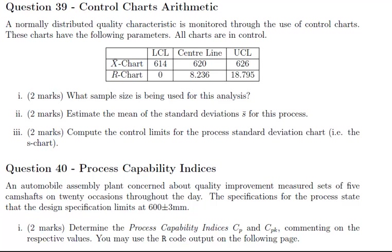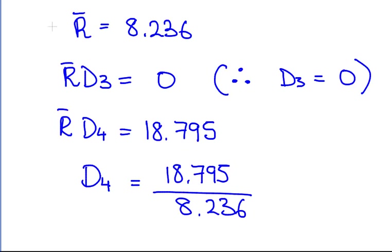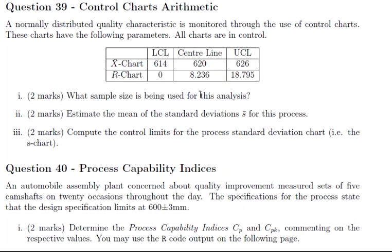So, how do we do this? Essentially what we are going to do is we are going to look at the R bar, R chart there. 0 for the lower control limit, 8.236 for the center line, and the UCL, the upper control limit is 18.795. So what we are told is the mean of R bar is 8.236, and this is R bar D3 and R bar D4.